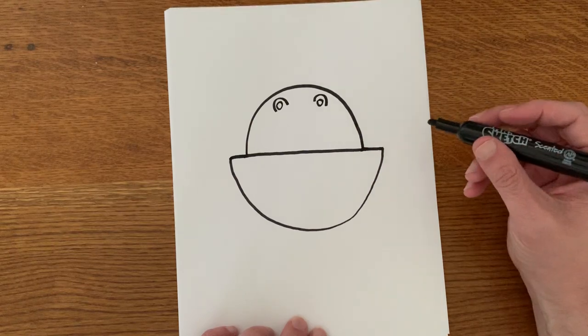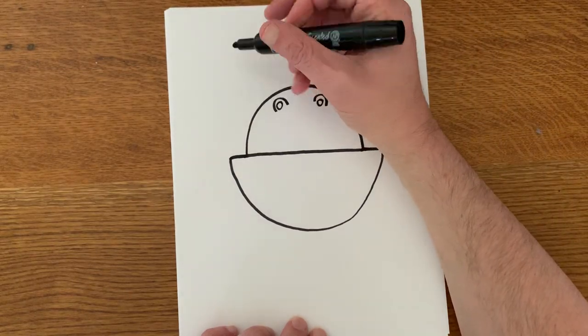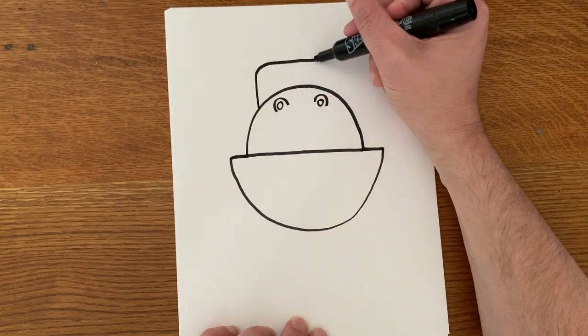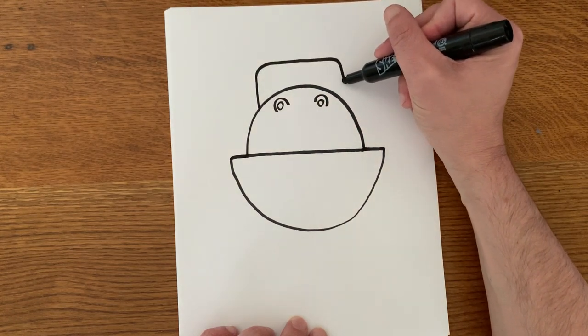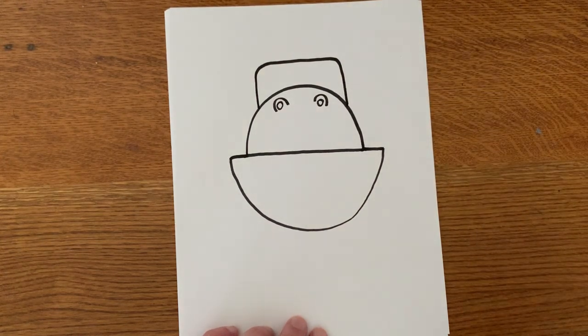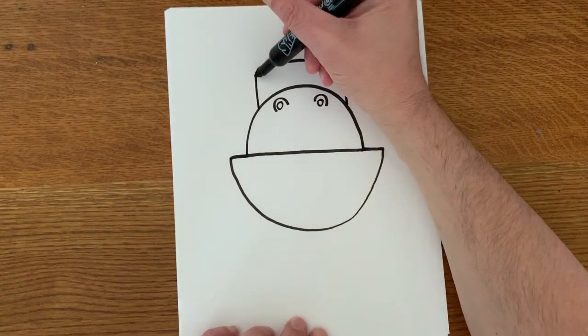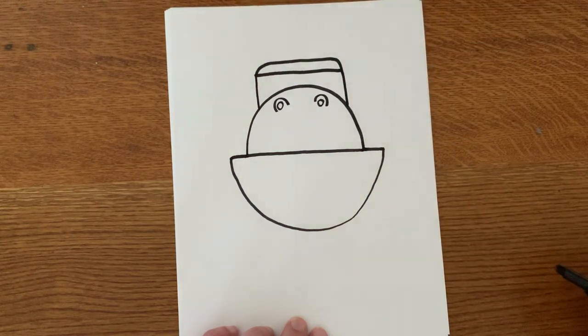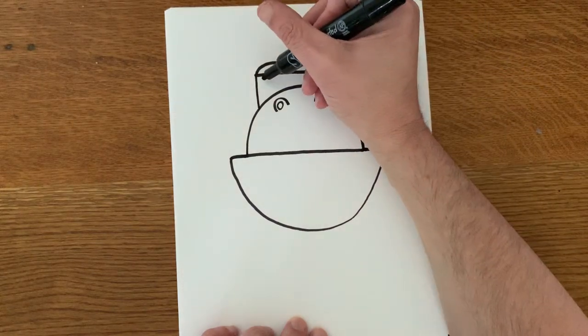Next we're going to draw where the eyes are going to go. So from about right here, up, over, and back down. Now you're going to draw a line straight across. This is going to kind of create a brow or the top of where his eyes are going to be.